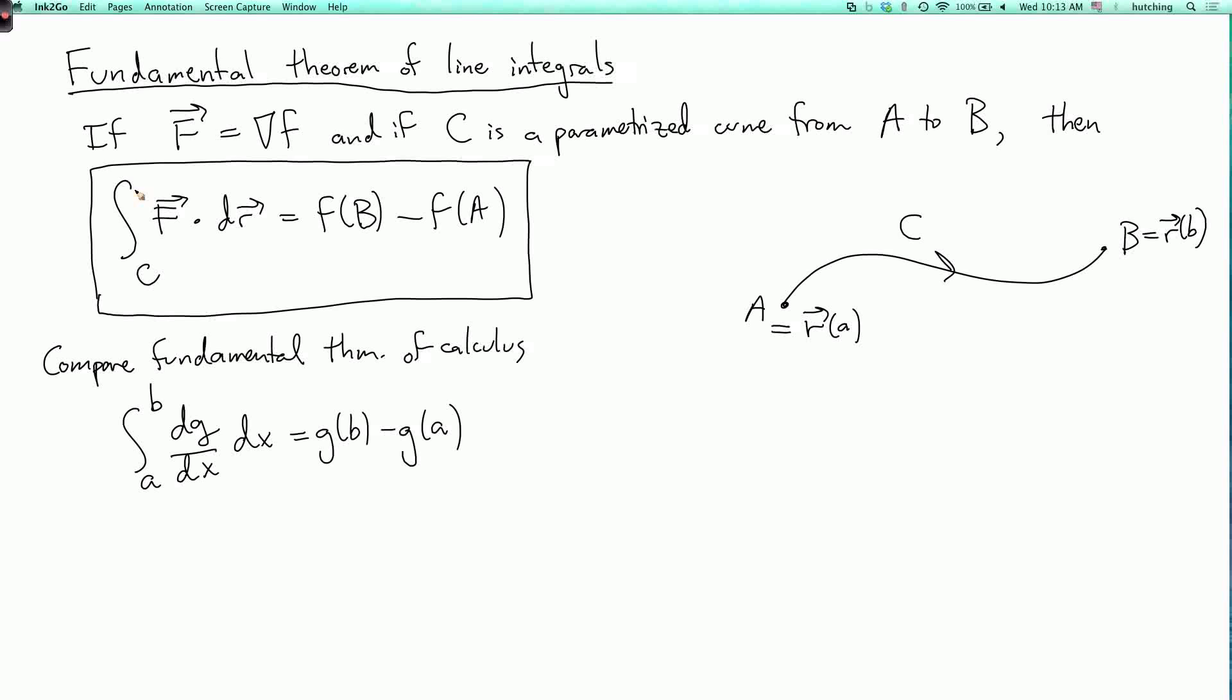Okay, so this has some consequences. So a corollary is that if f is conservative, then the integral over c of f dot dr depends only on the endpoints of the curve, and not on the curve itself.